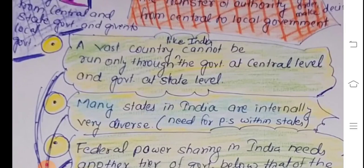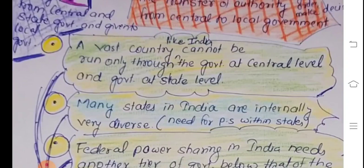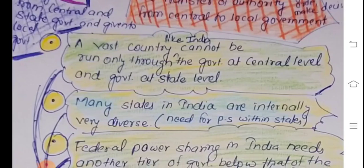In what we have studied so far, we have discussed the two tiers of government in India — the government at the central level and the government at the state level. Now, India is a vast country, and states in India are as large as countries in Europe. In terms of population, the population of Uttar Pradesh is more than that of Russia, and the population of Maharashtra is more than that of Germany.